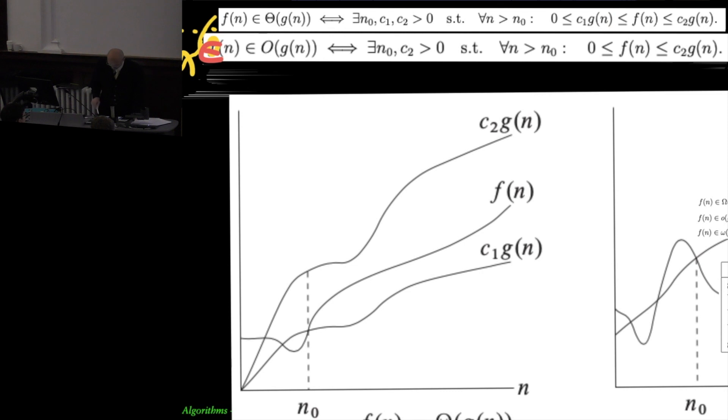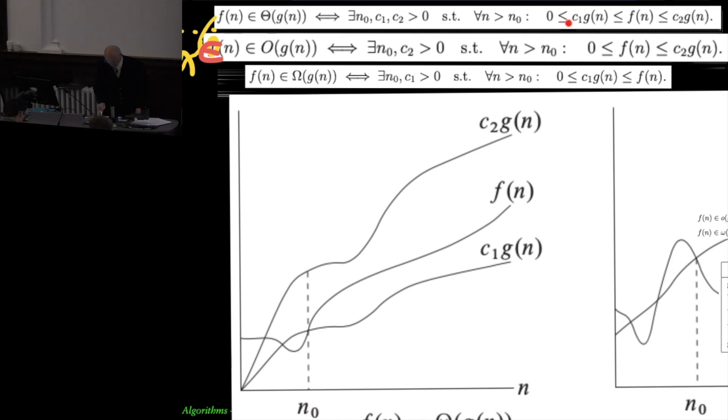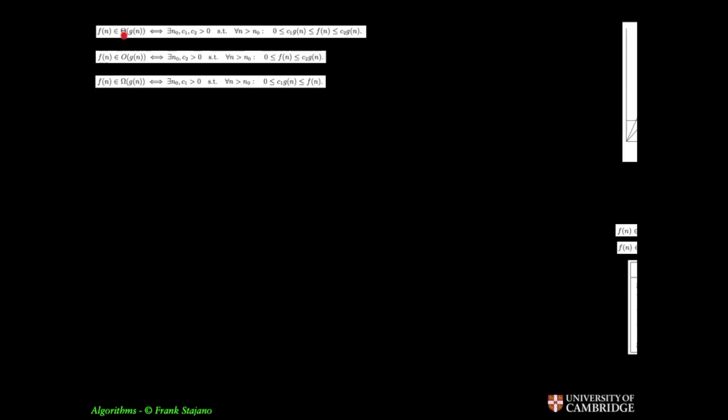And so you do that by removing this part and keeping only this part and we call this omega instead of o. So omega you only keep this.